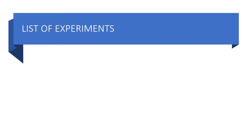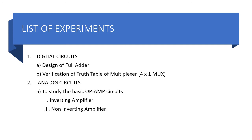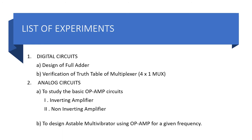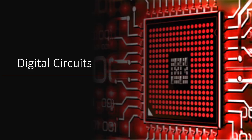Our lab is basically divided into two sections — the first being digital and the second being analog circuits. Under digital circuits, we will be designing a full adder circuit and verifying the truth table of a 4-to-1 multiplexer. Under analog circuits, we will study basic op-amp circuits — that is, inverting amplifier and non-inverting amplifier — and design an astable multivibrator using an op-amp for a given frequency.